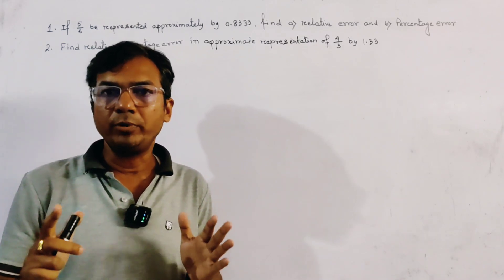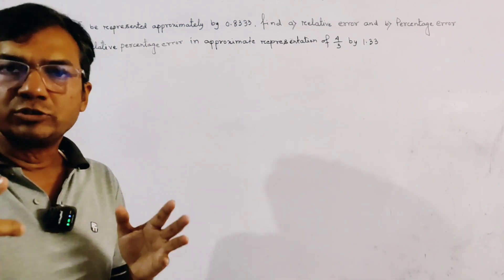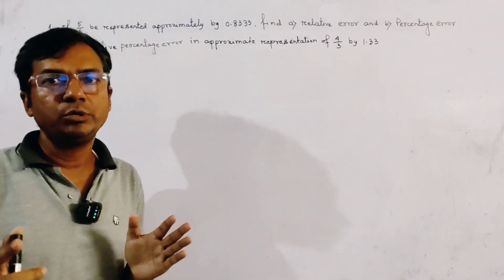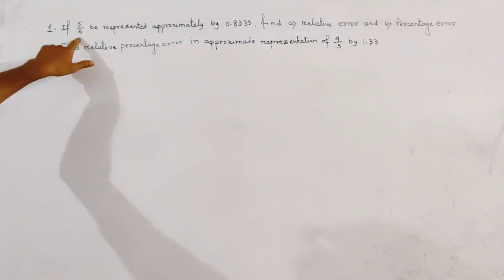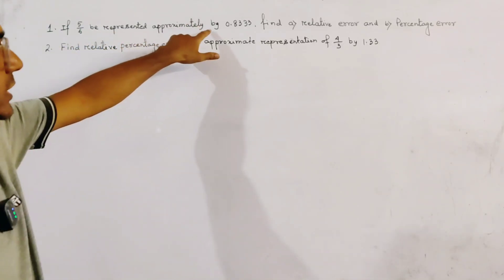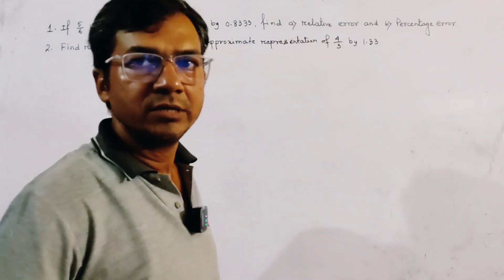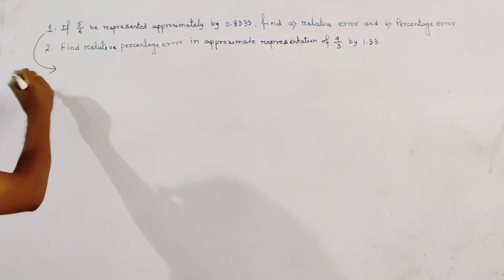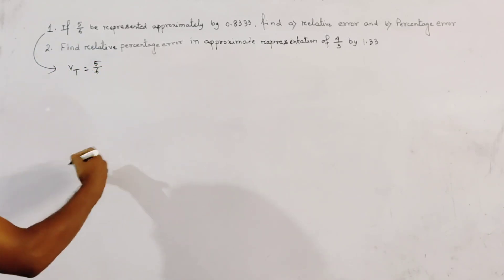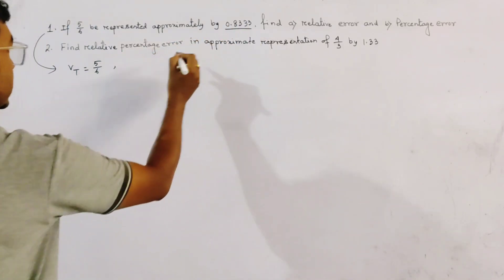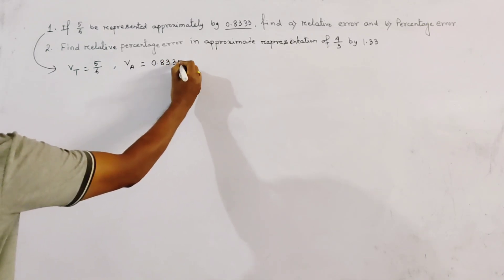Here we solve two problems of numerical analysis based on error — relative error, percentage error, absolute error, etc. The first problem: if 5/6 is represented approximately by 0.8333, find the relative error and the percentage error. For the first problem, the true value Vt is equal to 5/6, and the approximate value Va is equal to 0.8333.